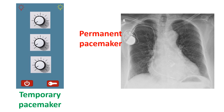When the cause of AV nodal disease is temporary, as in a heart attack, a temporary artificial pacemaker is used. If the cause of AV nodal disease is permanent, a permanent artificial pacemaker is needed.